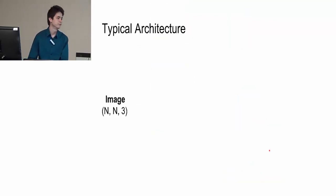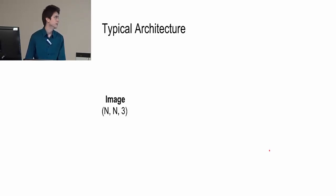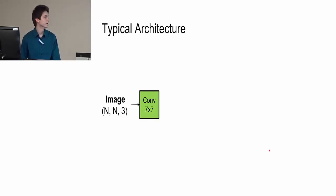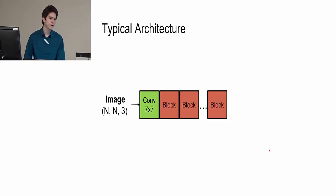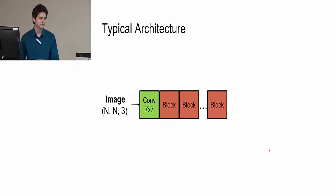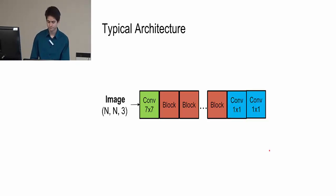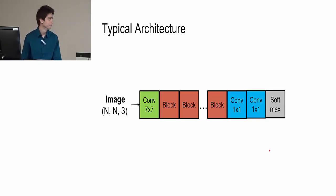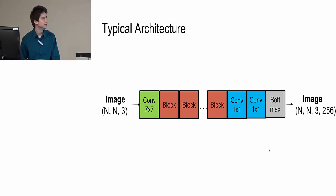Here's a typical architecture used for all of the models this paper presents. We start with an image of height by width by three color channels. It goes through a 7x7 convolutional layer, followed by several residual blocks, which can be convolutional layers or LSTM layers depending on what we're doing. Then we have two 1x1 convolutional layers and finally a softmax layer. The output of the softmax layer is an image of the same size as the input, but with 256 values for each pixel representing the probabilities of those intensity values.